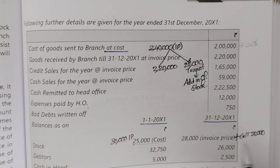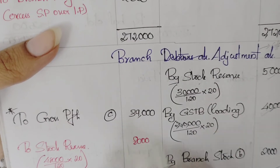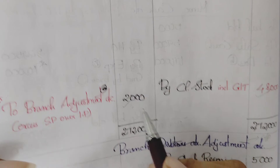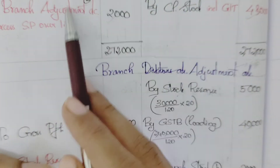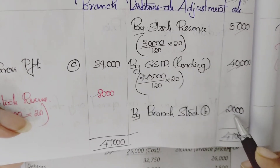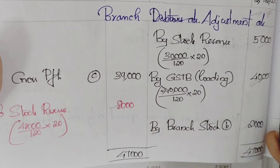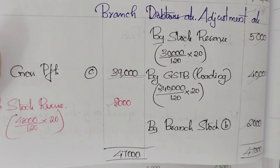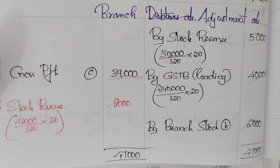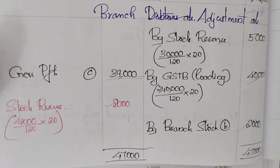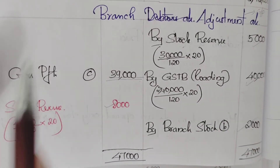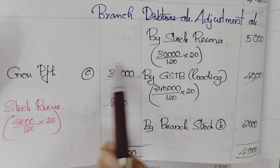Closing stock is $48,000. Stock reserve is recorded in the branch adjustment account on the debit side — the loading/unrealized profit is cancelled. The branch adjustment account's balancing figure gives the gross profit. So the branch stock account closes to the branch adjustment account, and the branch adjustment account's balancing figure is gross profit.